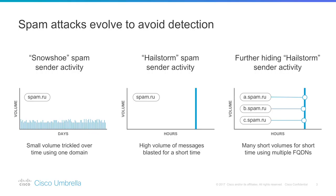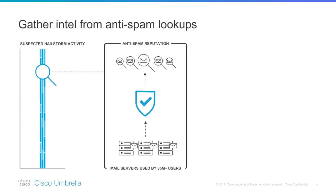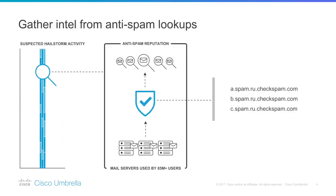So as we have seen, the hailstorm attack spans a short time period — usually within an hour — and is made up of many messages sent from multiple subdomains that are all part of the same domain. Working with Talos, we found that there are hundreds of anti-spam services queried by our users. Companies' mail servers send queries to these services to combat attacks such as hailstorm, and because our 85 million DNS users have mail servers, we are able to see these query patterns.